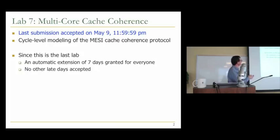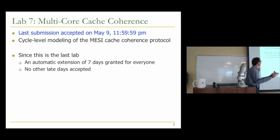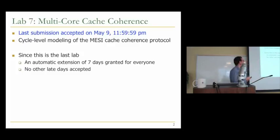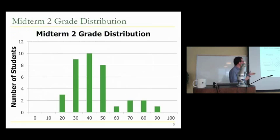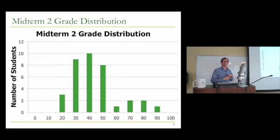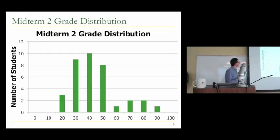Originally we said May 2nd. Basically, what we're doing is we're granting an automatic seven-day extension to everyone, instead of asking you to submit everything on May 2nd. But there are no other late days except this.